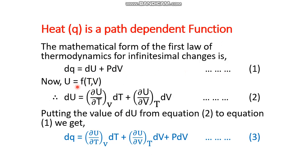Now, u is a state function, so it should be a function of states of matter — pressure, volume, and temperature — and you can select any two of them. Here we have selected temperature and volume, so u is a function of temperature and volume. If it is so, then du has the expression: (∂u/∂T)_V dT plus (∂u/∂V)_T dV. This is equation number two.